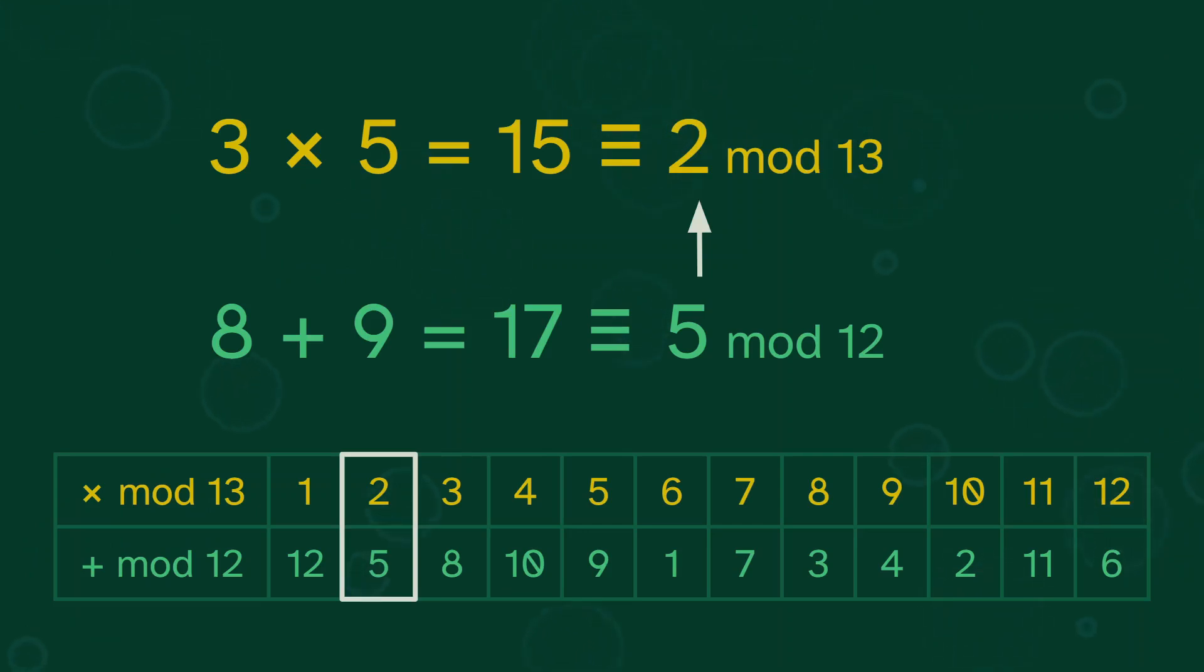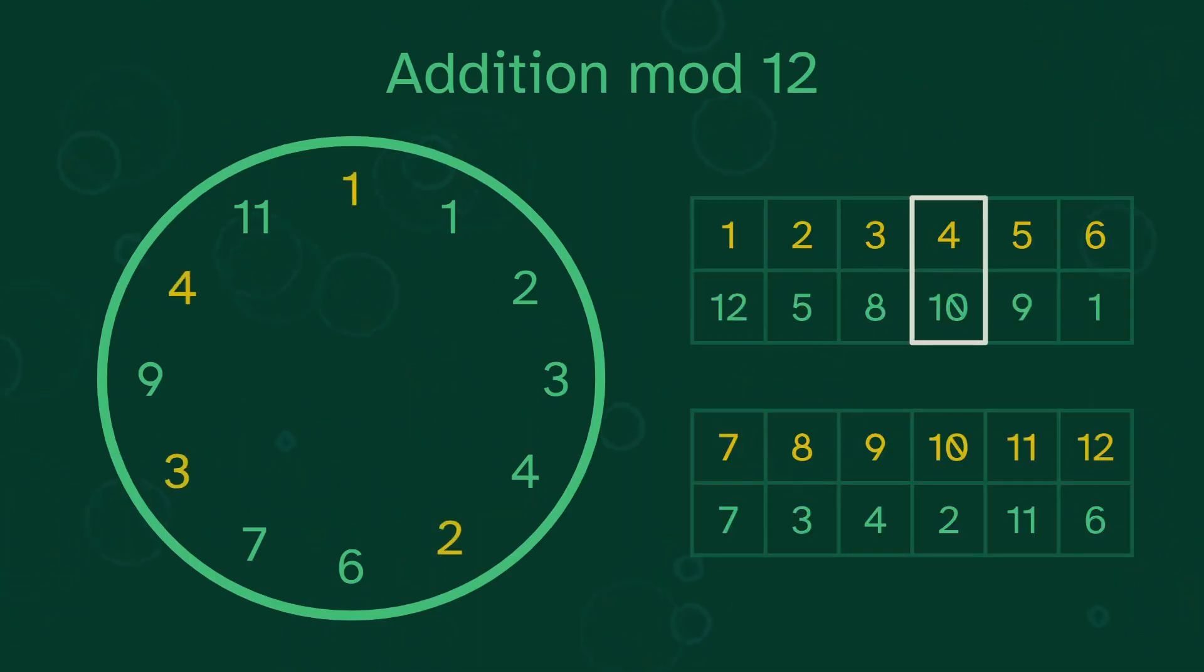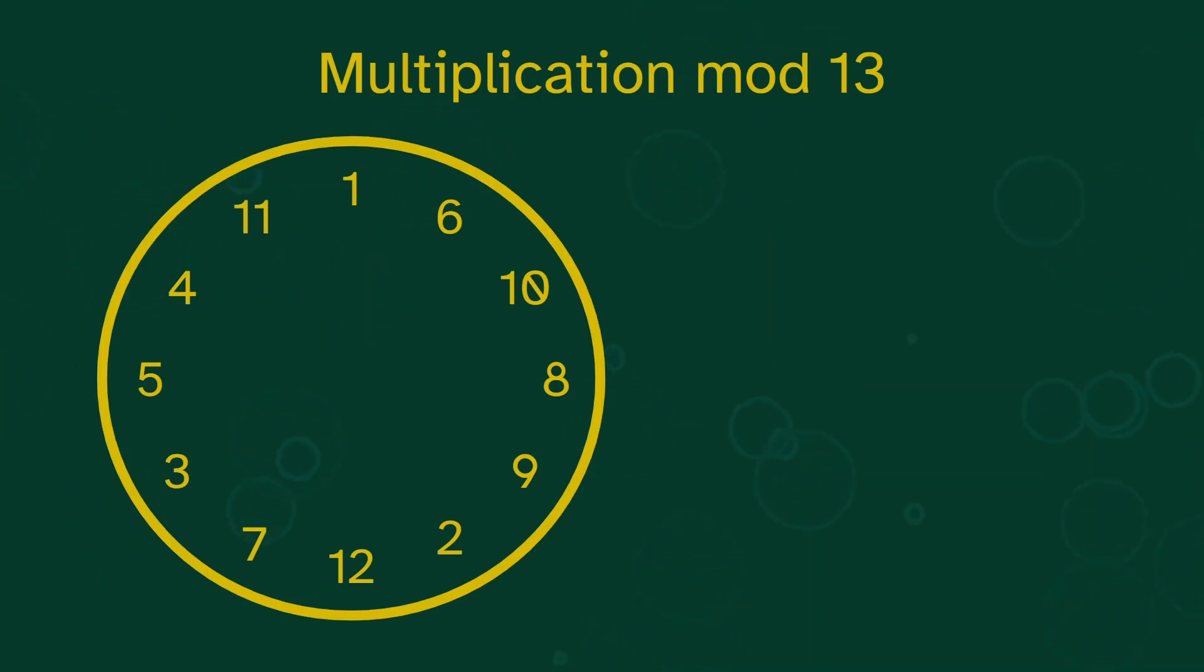I chose this map as an example because addition mod 12 is very familiar to anyone who has used a clock. If we start at 8 o'clock and then 9 hours pass, we will be at 5 o'clock. Clocks work in mod 12. And if we apply that map onto the clock, we now have a visual method for multiplication mod 13. What's 10 times 7? This distance moves 1 to 10, so it must represent multiplying by 10. So we can apply that distance to 7, and we get our result of 5. Nice!